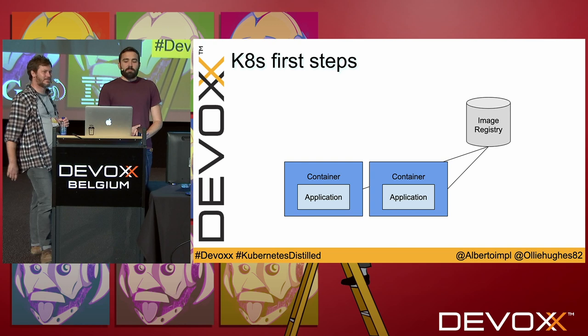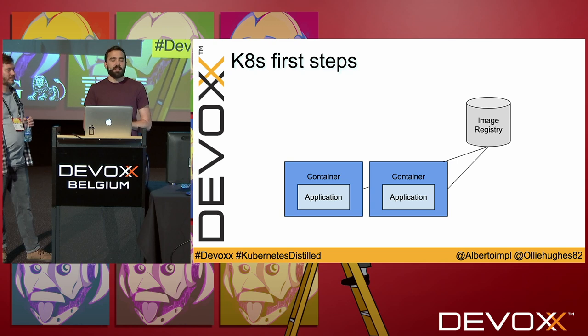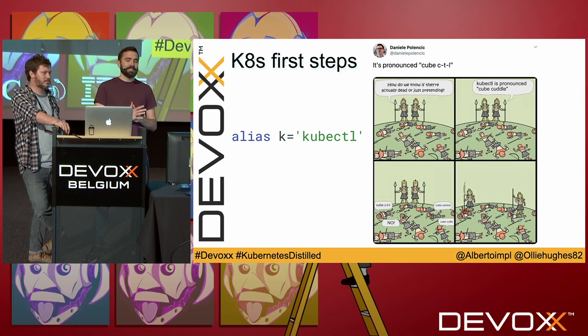Now that we have an image in our registry with a tag, we're ready to go into the Kubernetes world. The first thing I struggled with was the CLI — nobody knows how to pronounce it. Some people say 'kubectl', some say 'kube control', some say 'kube cuttle'. I personally don't pick sides on these battles, so I just created an alias the first day and I've been happy ever since. This is the CLI we're going to be using in the talk.